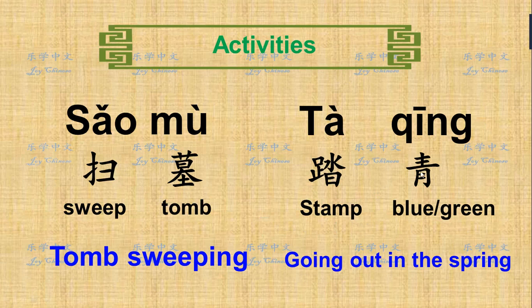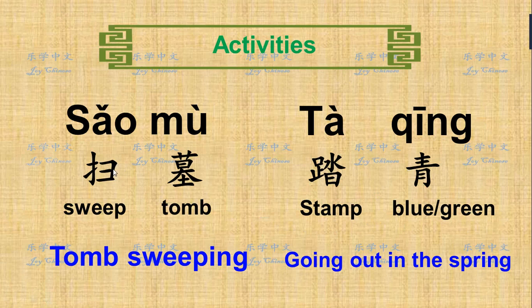The second activity is 踏青, which means going out in the springtime. 踏 means to stamp — using your feet to stamp on the grass. 青 is a color in between blue and green; it's used to describe the color of grass or newly sprouted leaves. So 踏青 means going out to the grassland, the woods, a good place for a picnic or entertainment.